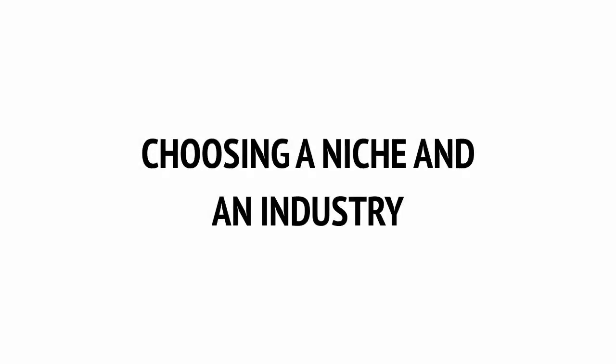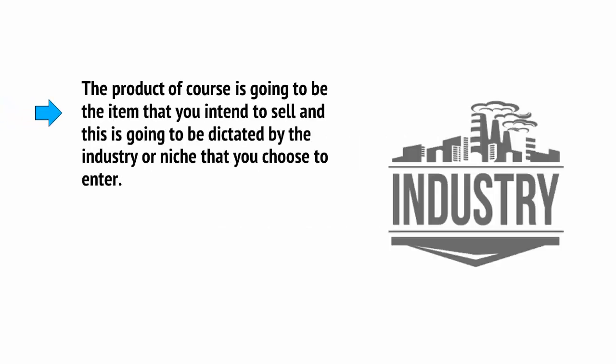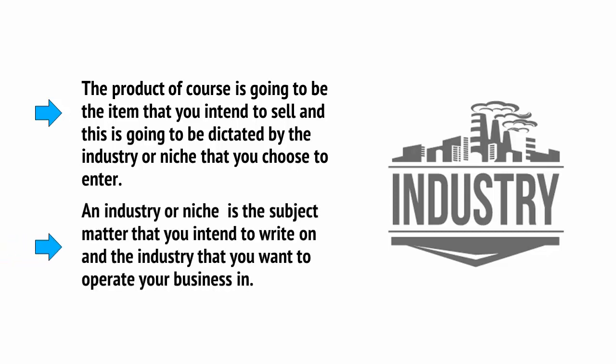Now you have the basic idea of how dropshipping works and how you need to get started, you can begin to think about how you're going to build your own business. This all begins with choosing your product and choosing your industry or niche. The product is going to be the item that you intend to sell, and this is going to be dictated by the industry or niche that you choose to enter. An industry or niche is the subject matter that you intend to write on and the industry that you want to operate your business in.